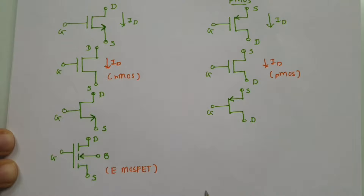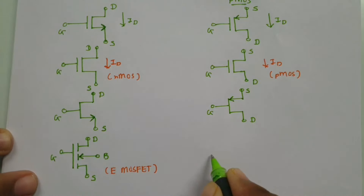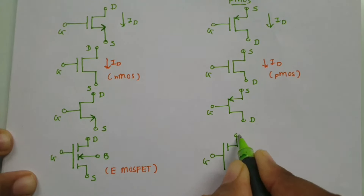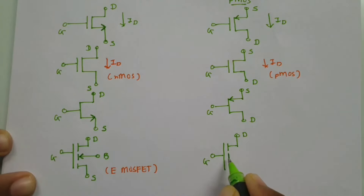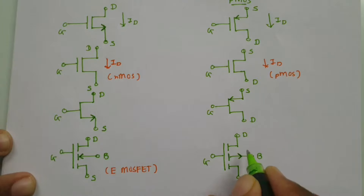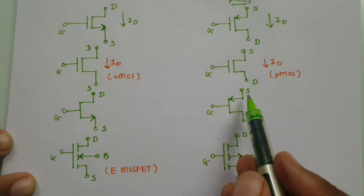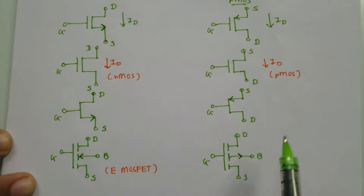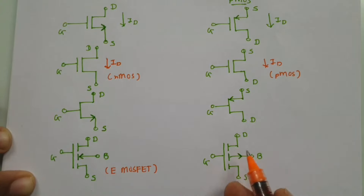For the enhancement-type four-terminal PMOS, there are again four terminals: gate, drain, bulk, and source. If you observe the bulk terminal direction, it will be in the outward direction. In PMOS circuits, the source is connected upward and drain downward. So this is the enhancement-type MOSFET with PMOS configuration.